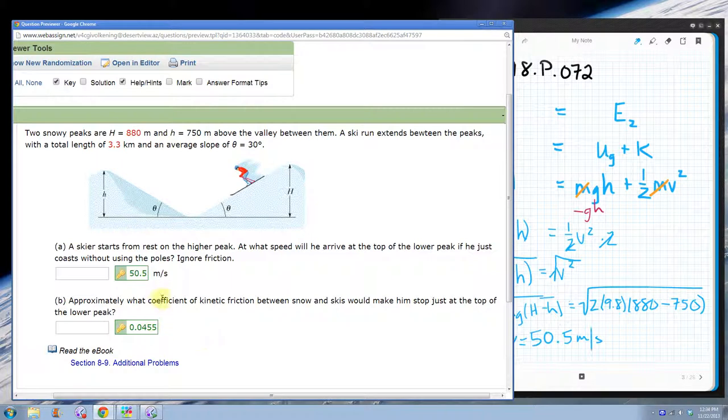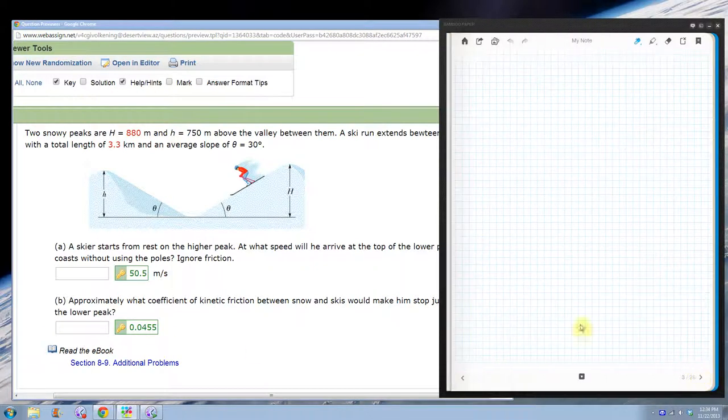Now, approximately what coefficient of kinetic friction between snow and skis would make him stop just at the top of the lower peak? This is a slight modification of what we just did, but only very slight.